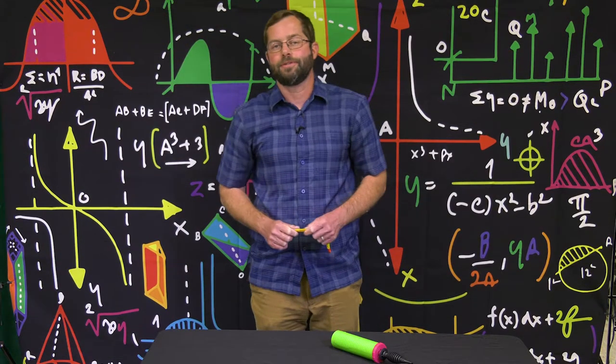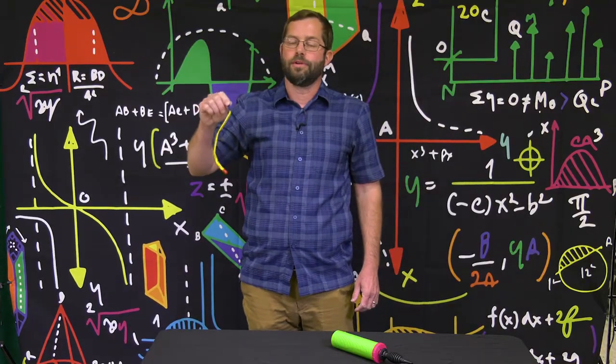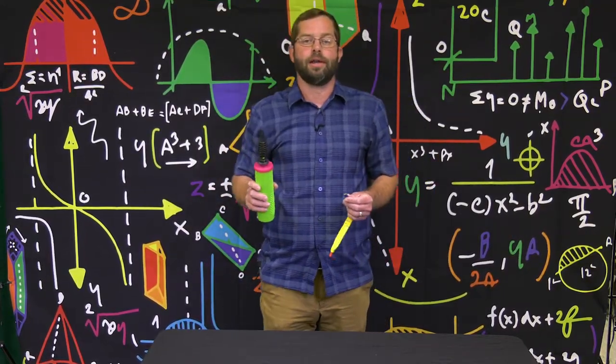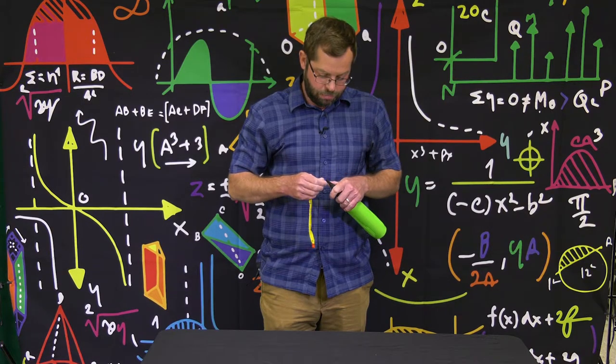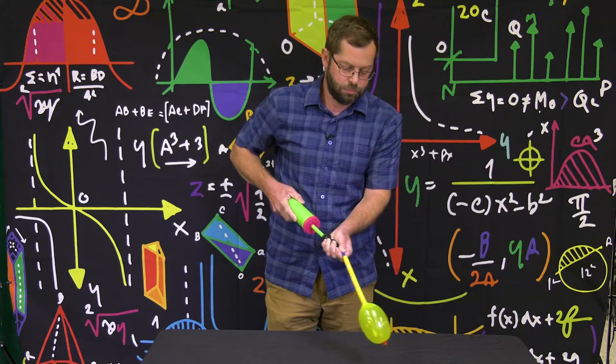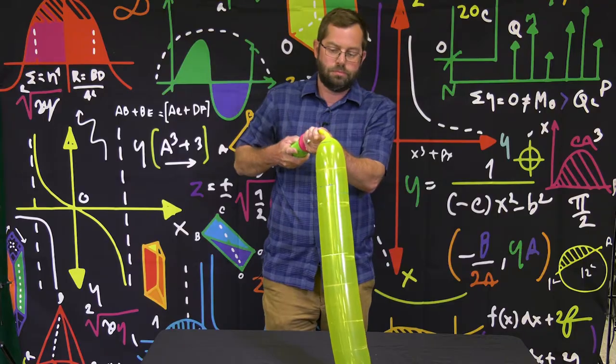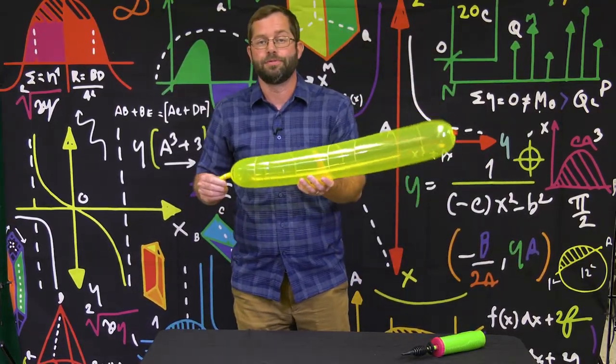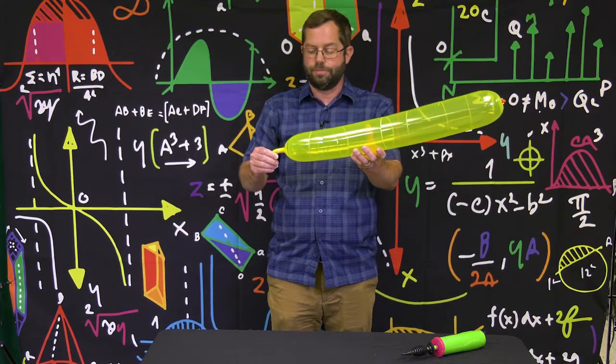All right, so we successfully launched our balloon rocket, and now I've got another type of balloon right here. We can continue to explore Sir Isaac Newton's third law of motion by using this balloon as well. I'm going to use a different kind of pump to blow up this balloon. All right, so this is a different type of balloon, a different shape. But the same idea right here, we filled it with air, and as we were pumping it full of air, inside of this balloon now there's a lot of force.